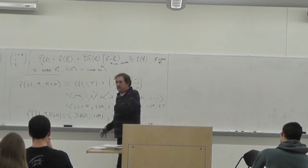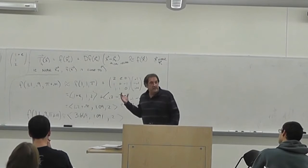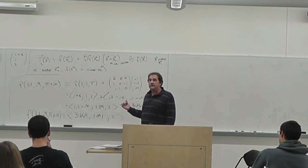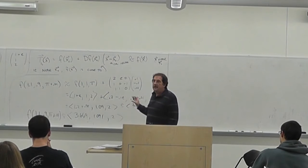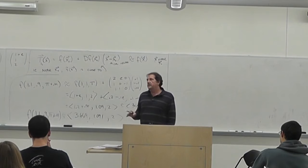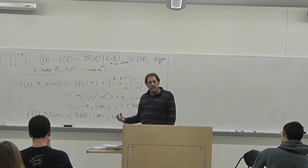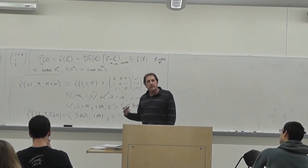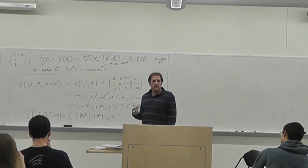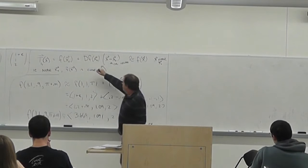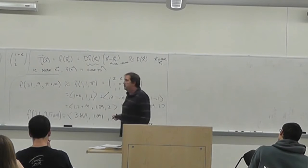This is just the same stuff you did in one-variable calculus where you approximate cosine of 0.1 by the value at 0 plus 0.1 times the derivative — exactly the same, except here we're moving using the tangent approximation in higher dimensions.